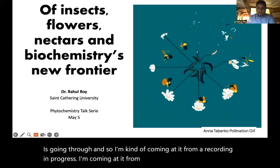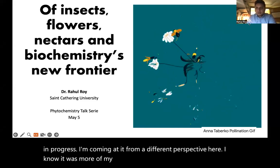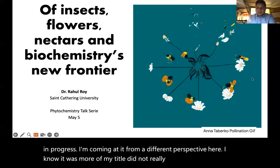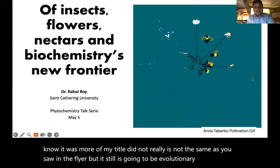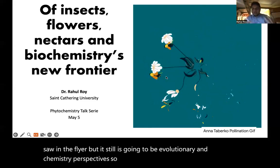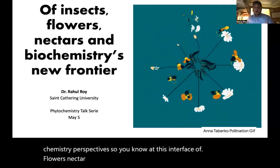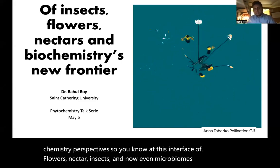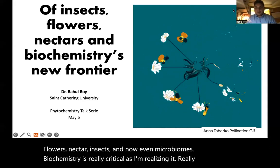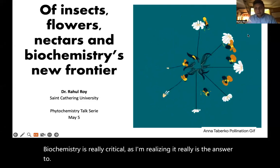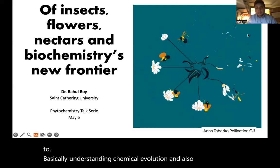I'm coming at it from a different perspective here. My title is not the same as you saw in the flyer, but it still is going to be evolutionary and chemistry perspectives. At this interface of flowers, nectar, insects, and now even microbiomes, biochemistry is really critical. It really is the answer to understanding chemical evolution and also chemical diversity.